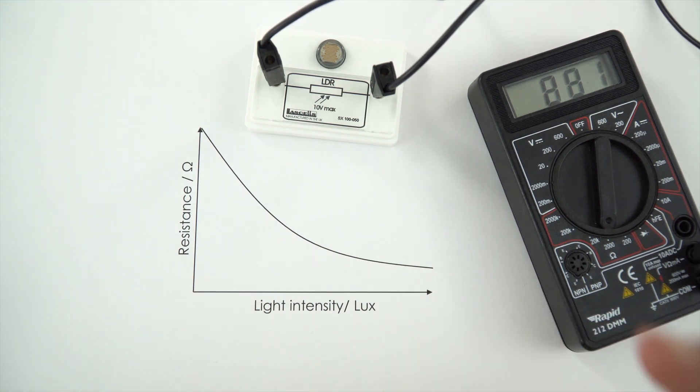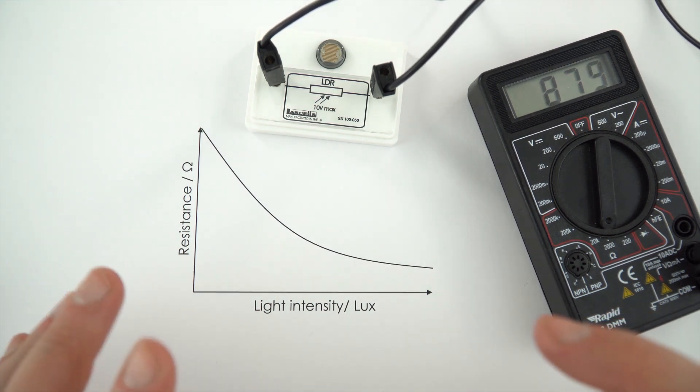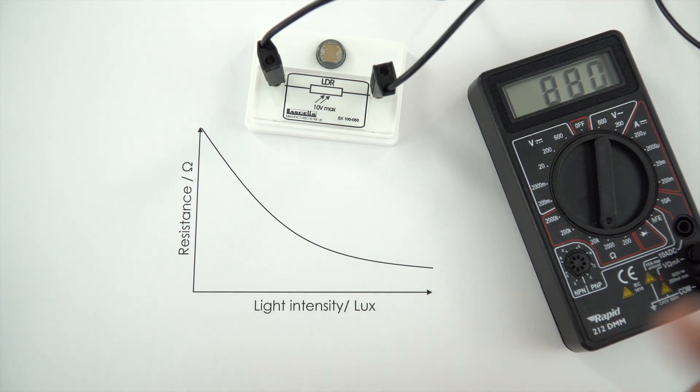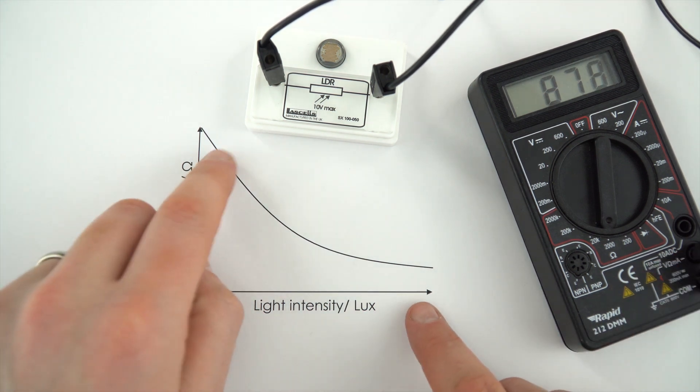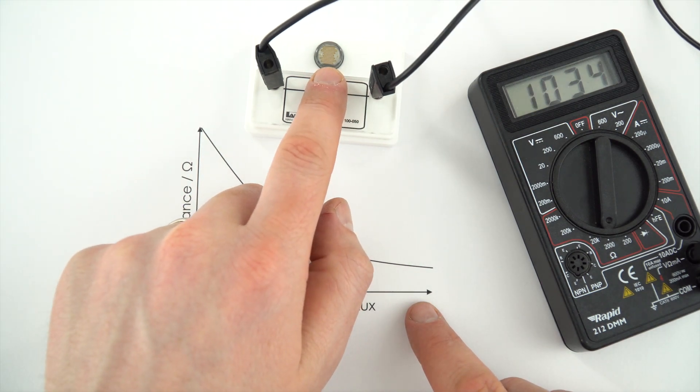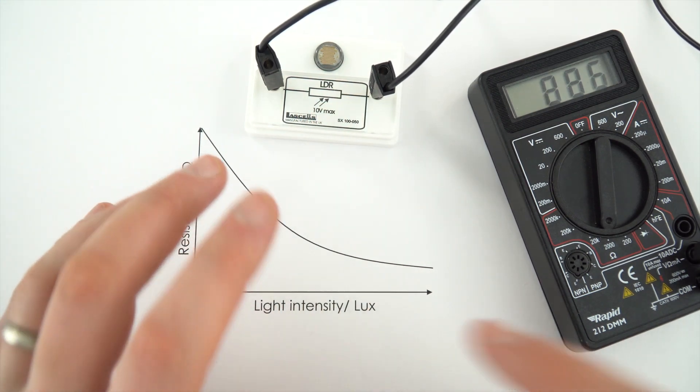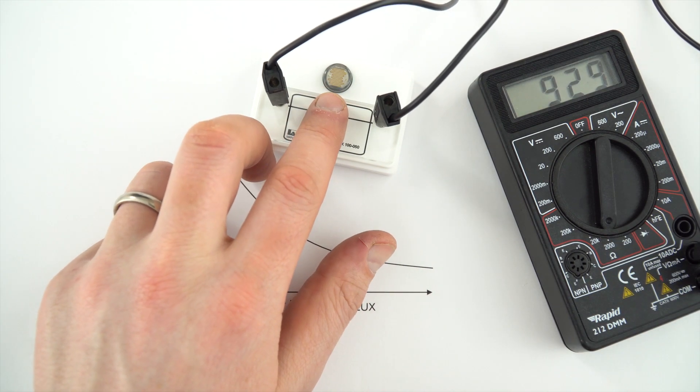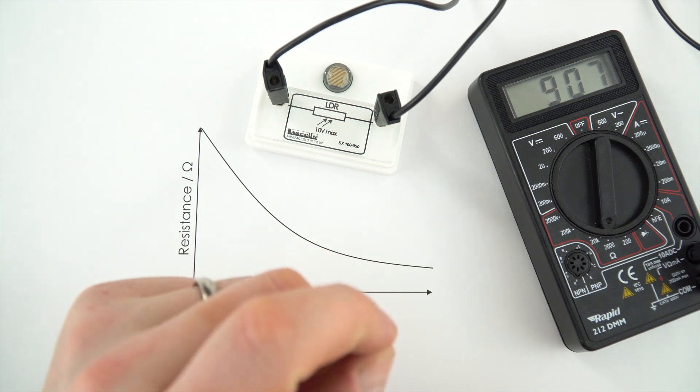Now this is incredibly useful because if you had an example where you maybe wanted to turn something on at night, maybe a street lamp or maybe the kind of solar lights that you might get in your garden. What this means is that this can act as a bit of a switch in a circuit and that means that when the light intensity of the surroundings changes we can use this to change the resistance of a circuit which will then maybe allow another light to come on.